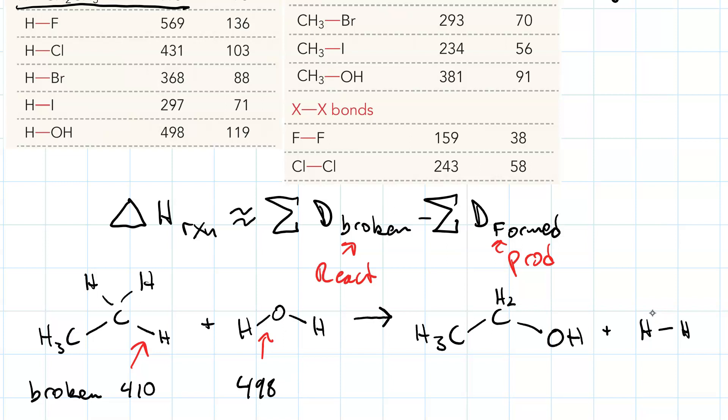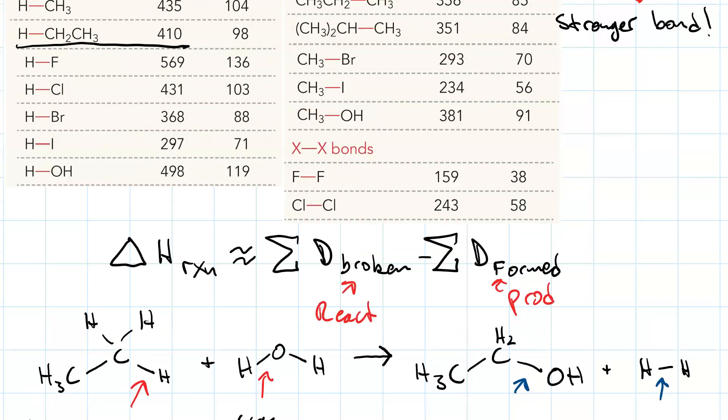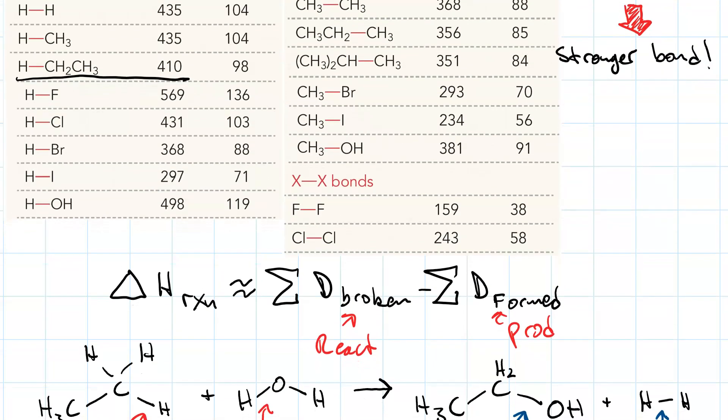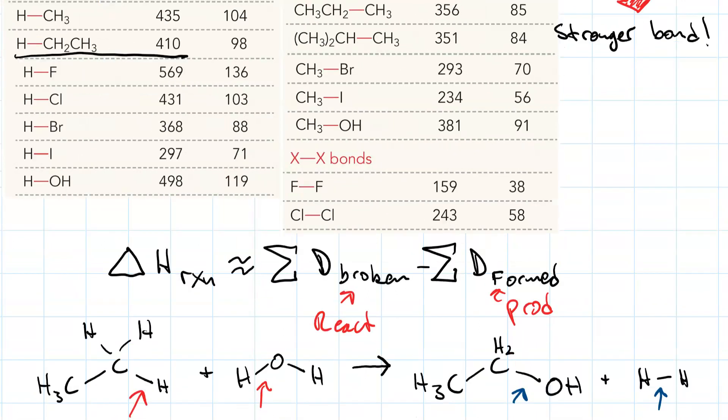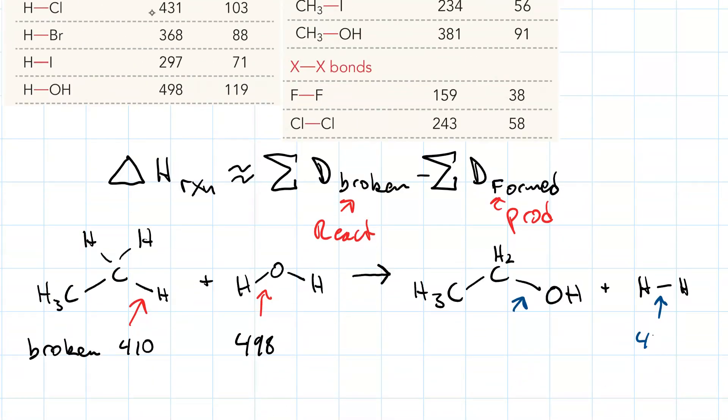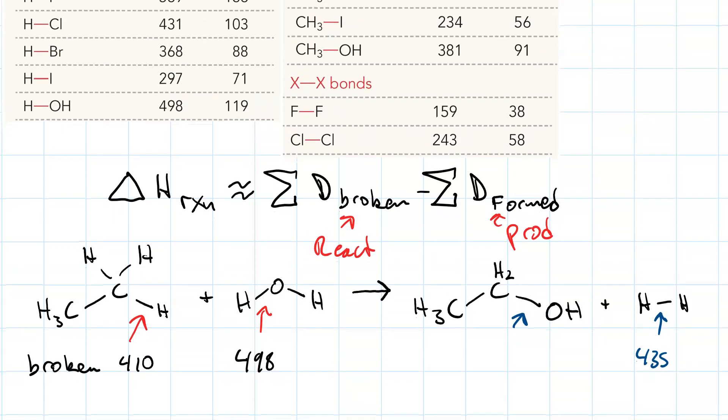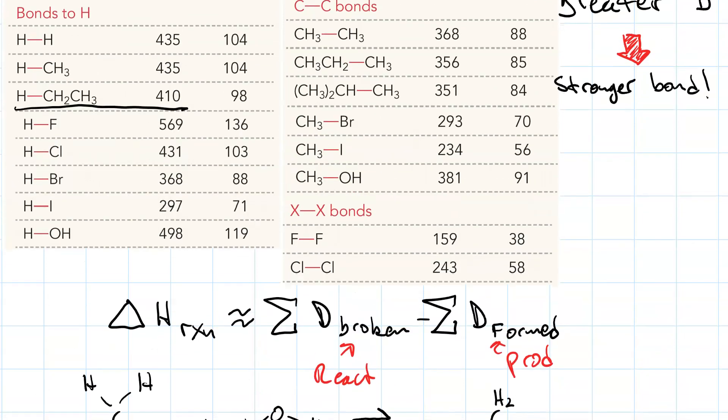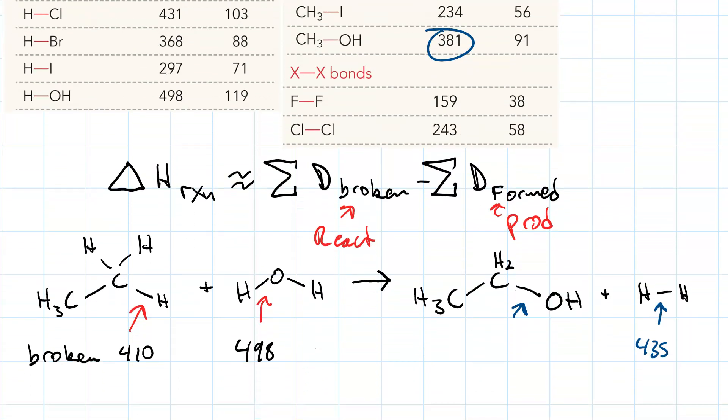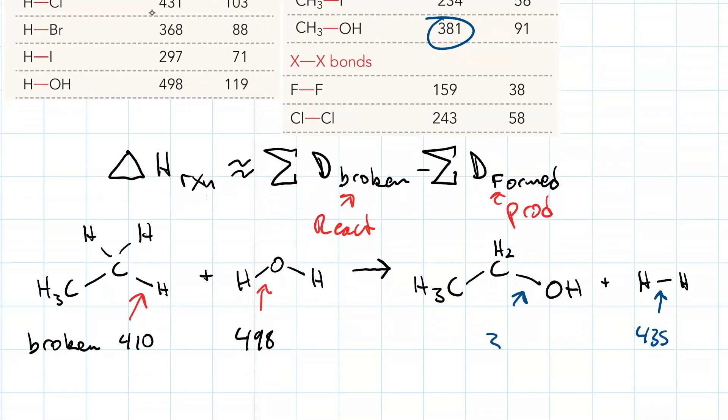What are we forming? This bond and this bond. The H-H bond is 435 kJ. For the C to OH bond, we don't have it for ethane, but we can assume it's pretty close to the one for methanol, 381 kJ per mole.